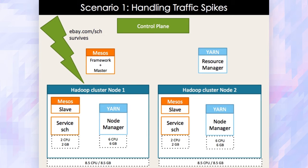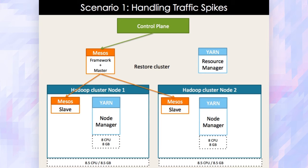Once the spike goes away and the control plane detects that, it can initiate a restore cluster flow, which basically terminates the additional instances deployed for the A-link service, and then restarts the node manager with full capacity. That's one example where we leverage the vertical scaling of the node manager to fail over for the traffic spike use case.